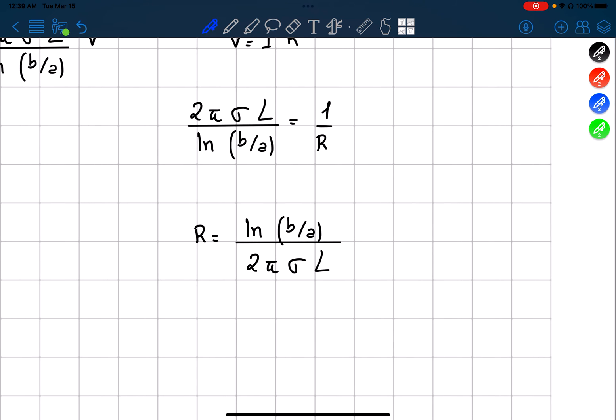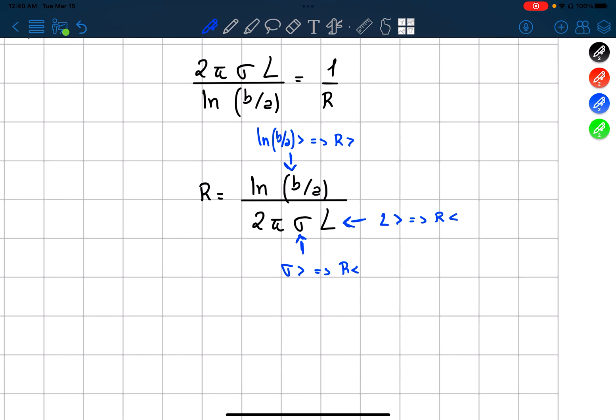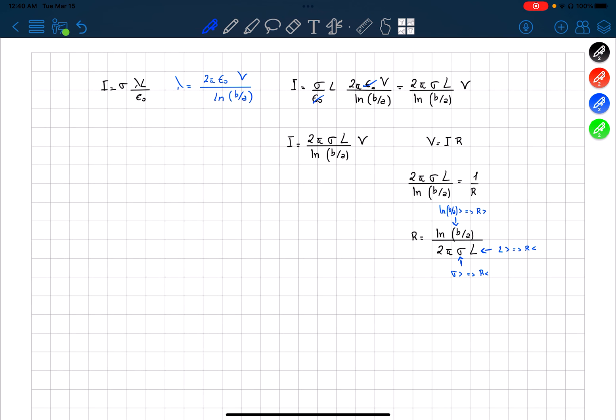From here we can see that a higher conductivity will give us a higher conductivity means lower resistance, as well as a higher length. Let's say if we have a logarithm on top, a higher ln of B over A is equal to a higher resistance. I hope for the table and you start to understand where this is going to go. If not, leave a comment asking for an explanation. Thank you very much.